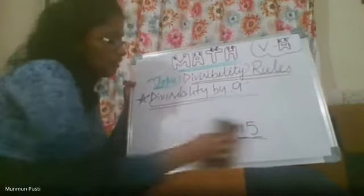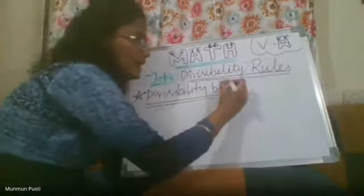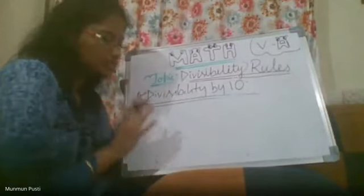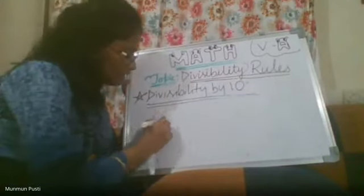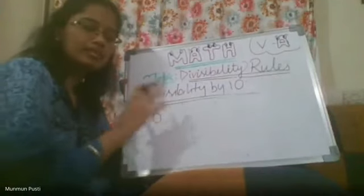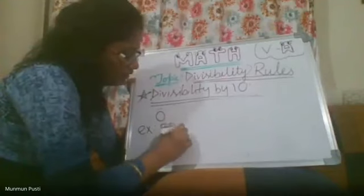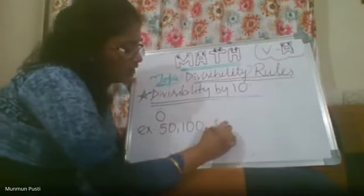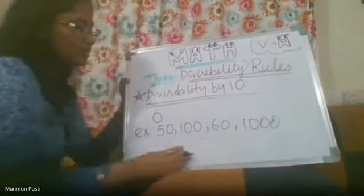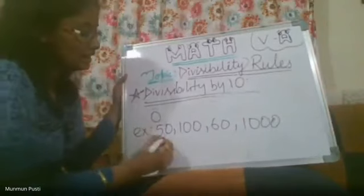Now the last rule: divisibility by 10. It is simple — we only need to look at the last digit (the ones place). If a number ends with 0, then it is divisible by 10. For example, 50, 100, 60, 10, or 1000 — all these numbers are divisible by 10 because their last digit is 0.